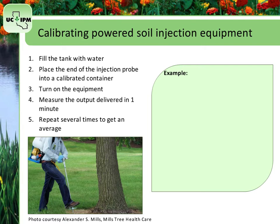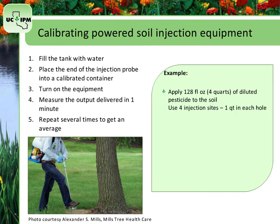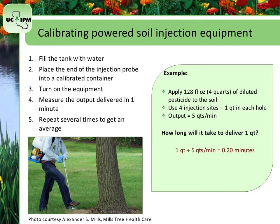Let's say you need to apply a total of 128 fluid ounces of diluted pesticide to the soil — that equals 4 quarts. If you plan to make the application using 4 injection sites, putting 1 quart into each hole, and you find the output to be 5 quarts per minute, divide 1 quart by 5 quarts per minute to get 0.20 minutes. Multiply 0.2 minutes by 60 seconds per minute to get 12 seconds — the amount of time needed to inject 1 quart of mixture into one hole.